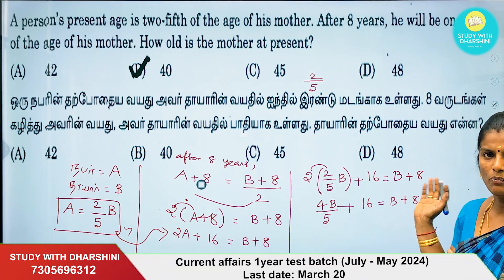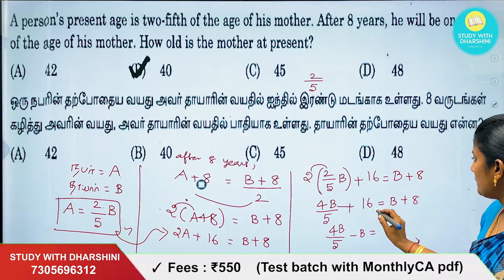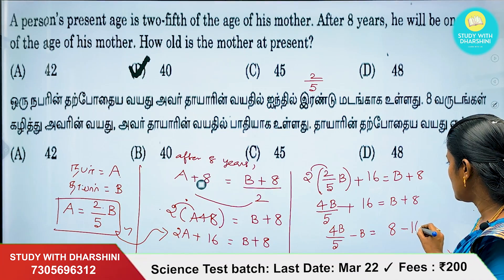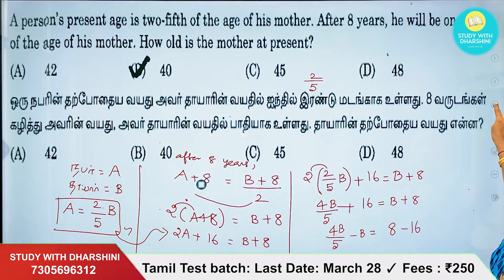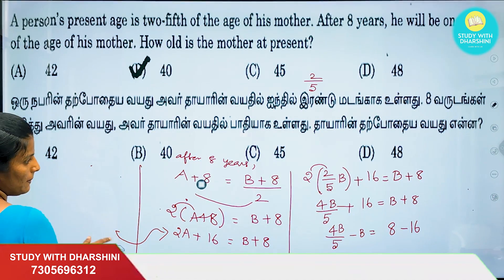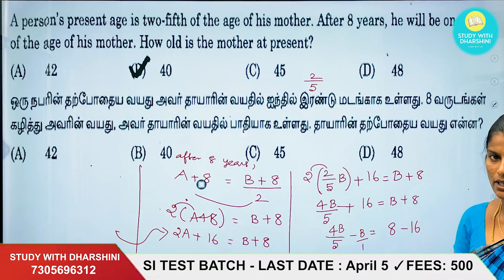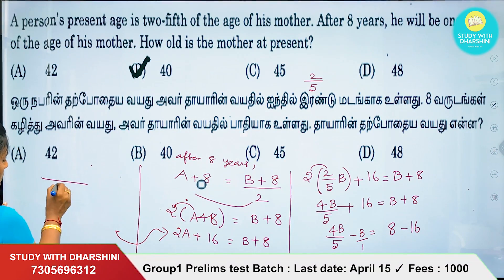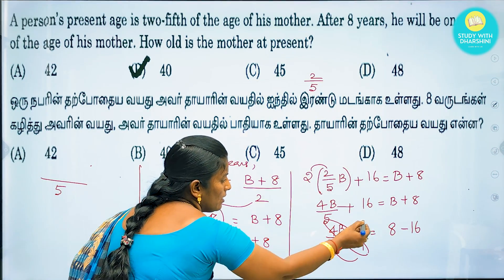Now we have a and b, two unknowns, so we have to solve this equation. We replace a, so a will be 2 by 5 of b. So we get 4b divided by 5 plus 14b plus 8. So 4b divided by 5 is minus b. We need to simplify it. B divided by 1 is the result, so we need to solve using LCM. Using the butterfly method: 1 into 5, we get 4b minus 5b.